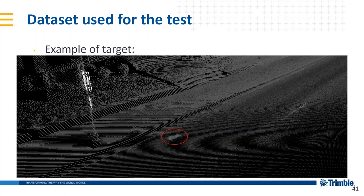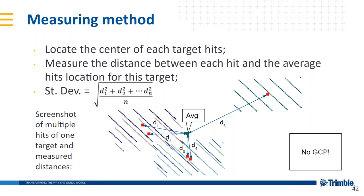Here is the whole trajectory and the location of our targets — located on the roadside along the trajectory. The targets are reflective rectangles on the pavement. The measuring method is to locate the center of each target hit, then measure the distance between each hit and the average hit location for that target. We calculate the standard deviation which gives us an estimation of relative accuracy. The relative position is measured between the hit and the average of all hit positions for each target, and we repeat this process for each processing mode.